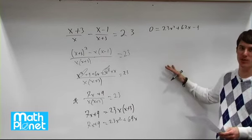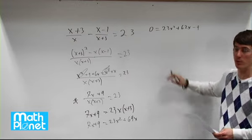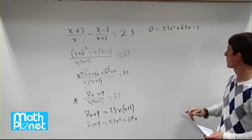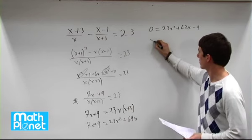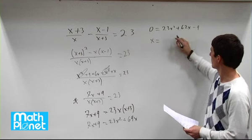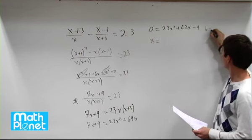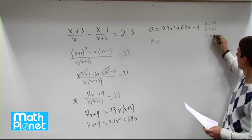So at this point, we can solve this however we want. Honestly, the most straightforward way for this is going to be the quadratic formula because these are kind of off numbers. It's not easy to factorize or anything like that. So using the quadratic formula, we have x equals minus b, which is this number. So we have b equals 62 where a is 23 and c is negative 9.